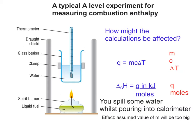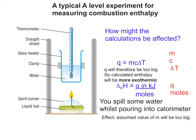So what about if you spill some water while you're pouring it into the calorimeter when setting up? The assumed value of m will be too big, so Q will be too big because m is too big. Therefore the calculated enthalpy will be more exothermic than it should be.